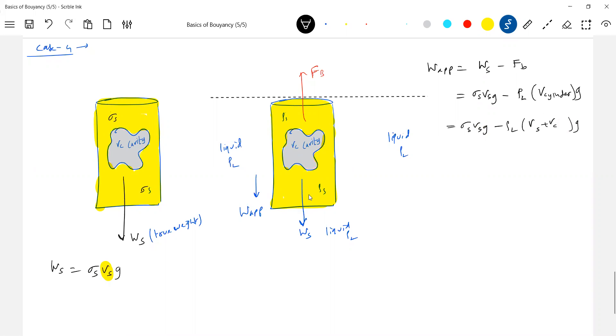This apparent weight I'm able to measure very clearly. I know W apparent weight. Now further what is Vs? You can write it. Vs, can we write it as actual weight by sigma s into g?